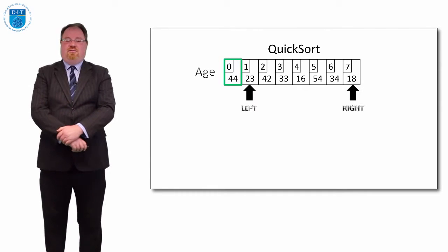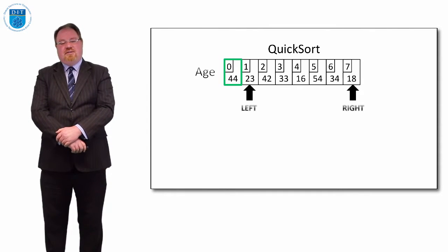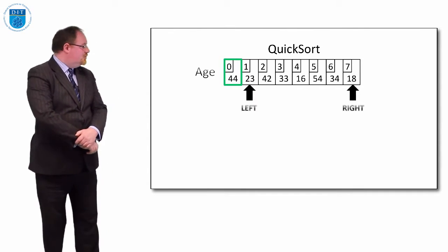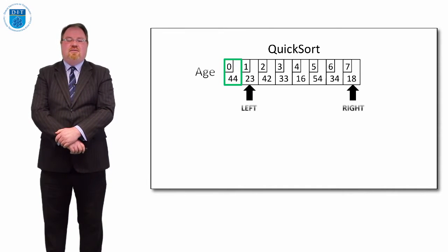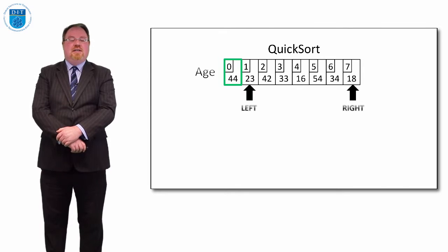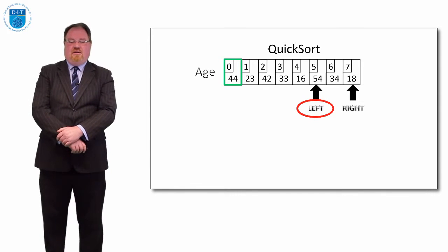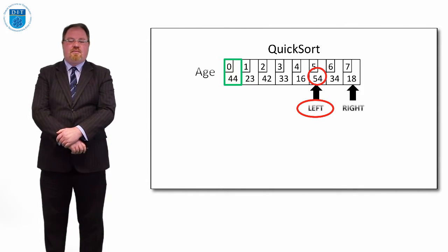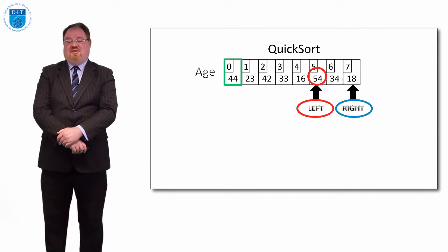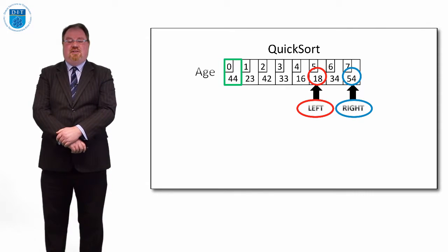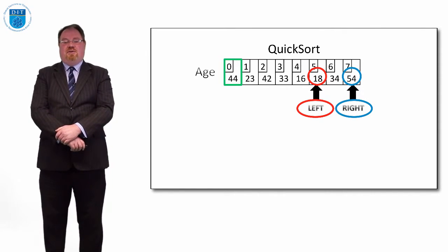We have two pointers, left and right. We move the left pointer across until we find a value that's bigger than our pivot value, and we keep moving the right pointer across until we find a value that's smaller than our pivot point. The left pointer finds 54, which is bigger than 44, and the right pointer finds 18 straightaway, which is smaller than 54. So we swap these two values and then move our left and right pointers together again.